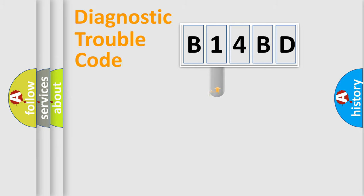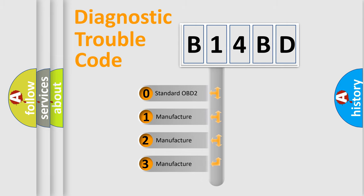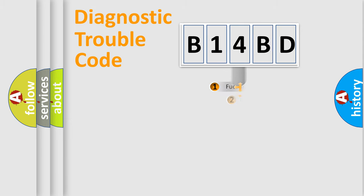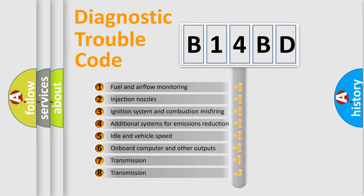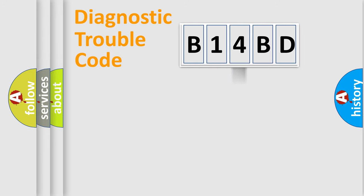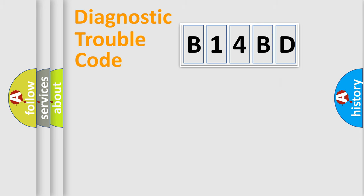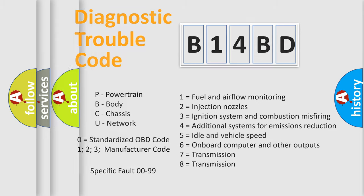This distribution is defined in the first character of the code. If the second character is expressed as zero, it is a standardized error. In the case of numbers 1, 2, or 3, it is a manufacturer-specific error. The third character specifies a subset of errors. The distribution shown is valid only for the standardized DTC code. Only the last two characters define the specific fault of the group.